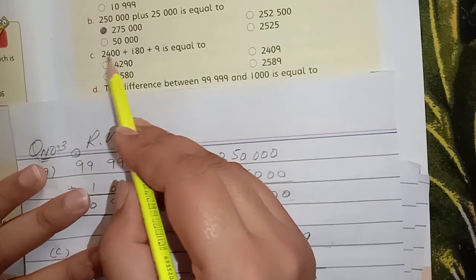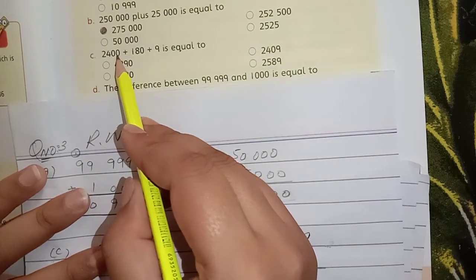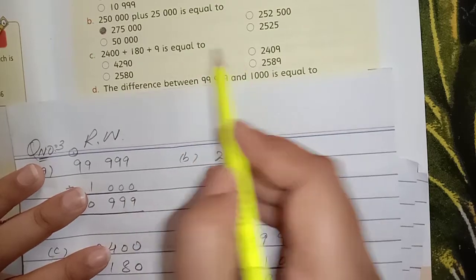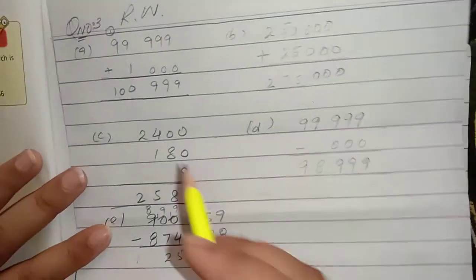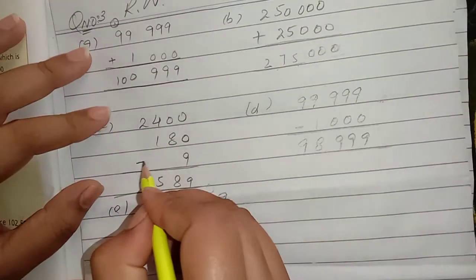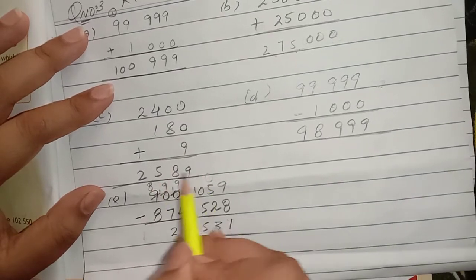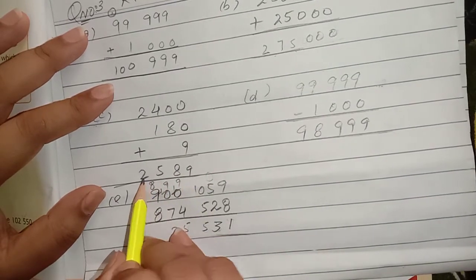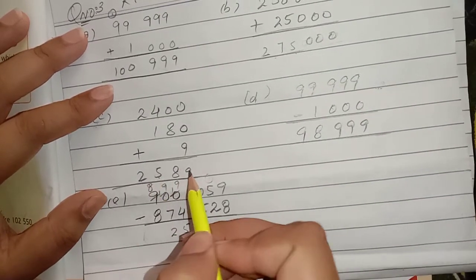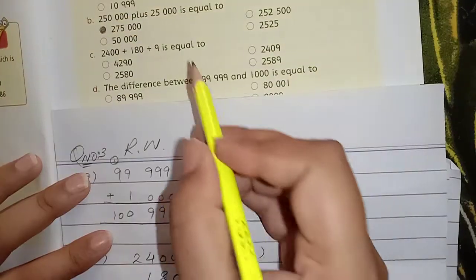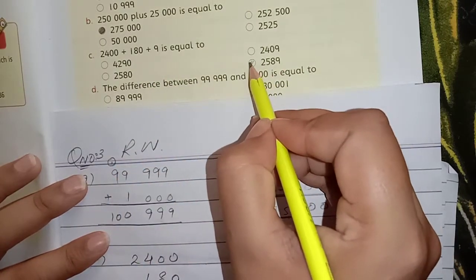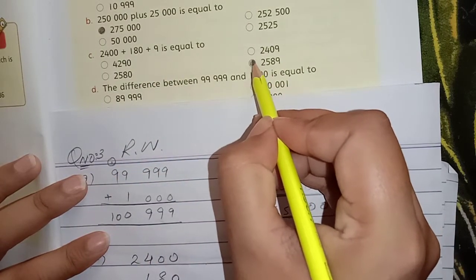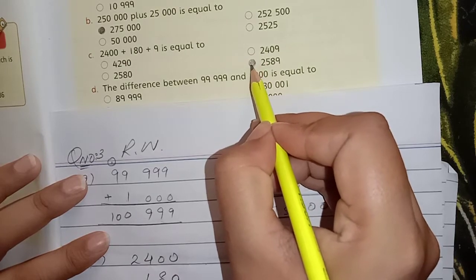C part میں کہہ رہا ہے: two thousand four hundred plus one eighty plus nine is equal to۔ ان تینوں کو plus کریں تو answer کیا آتا ہے۔ ان تینوں کو plus کیا تو ہمارے پاس answer بنا ہے: two thousand five hundred and eighty nine۔ اس کو color کر دینا ہے، یہ ہمارا correct answer ہے۔